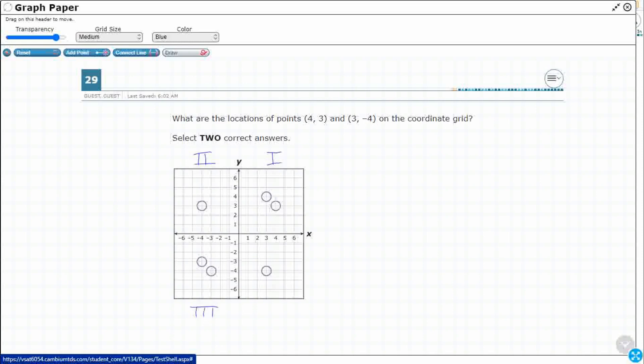Quadrant three, which is both negative, negative X, negative Y. And then quadrant four, using Roman numerals there, which is a positive X but a negative Y.